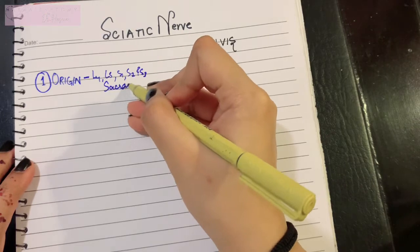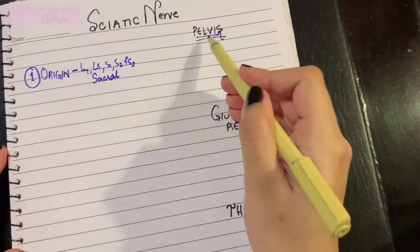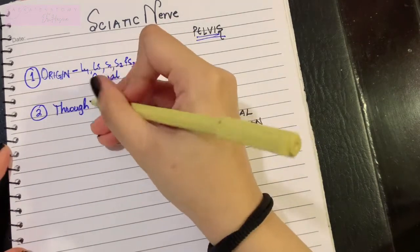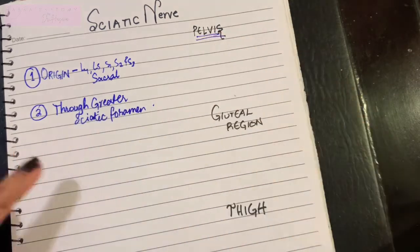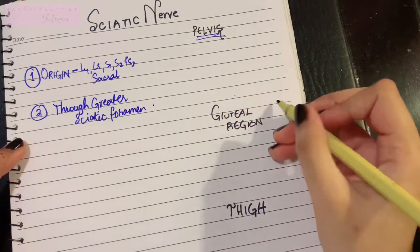Part one was the origin. Now you know that sciatic nerve arises from the sacral plexus. That's where it enters the pelvis. Then in the pelvis, part two occurs, which is that it passes through the greater sciatic foramen. That's when it enters the gluteal region.